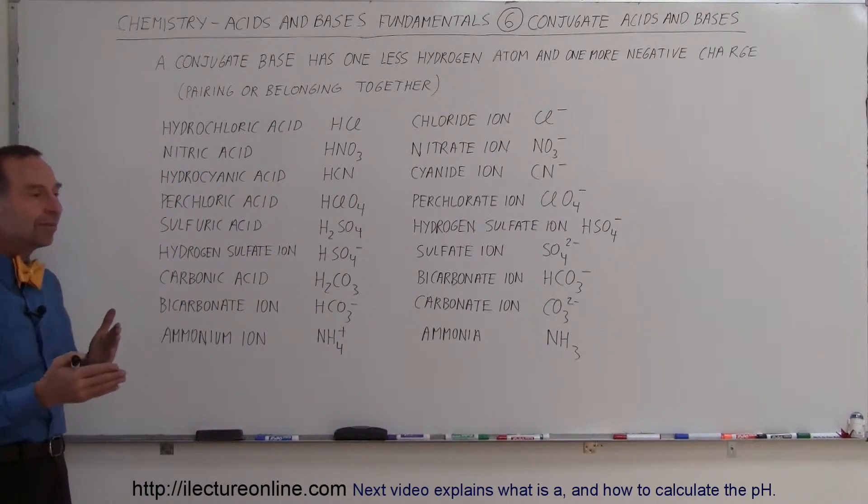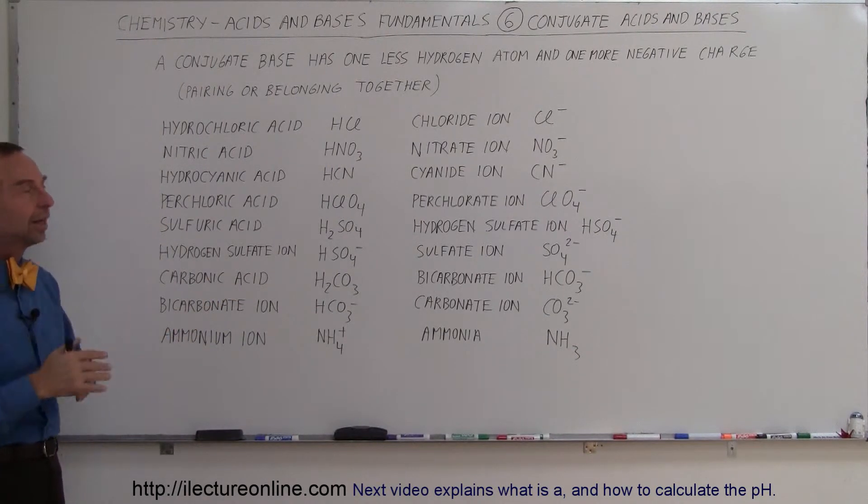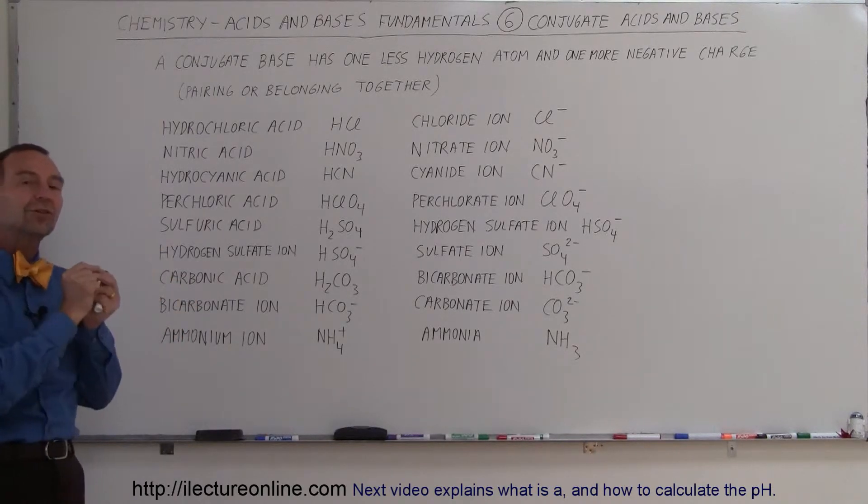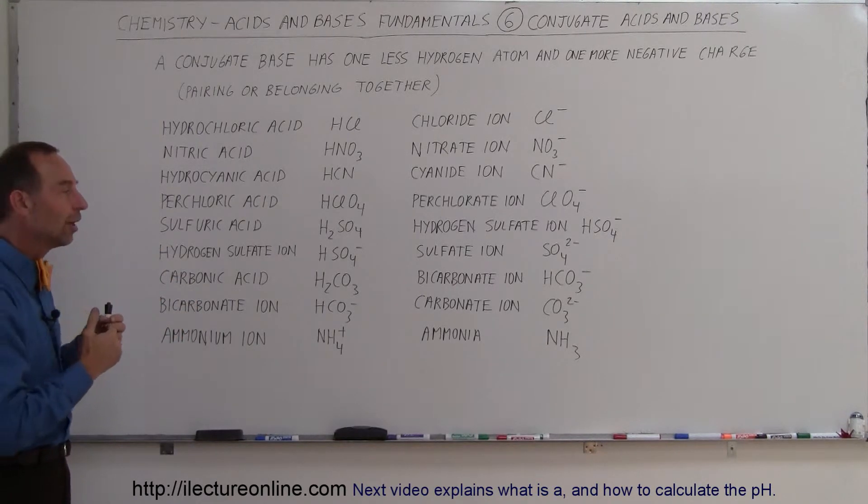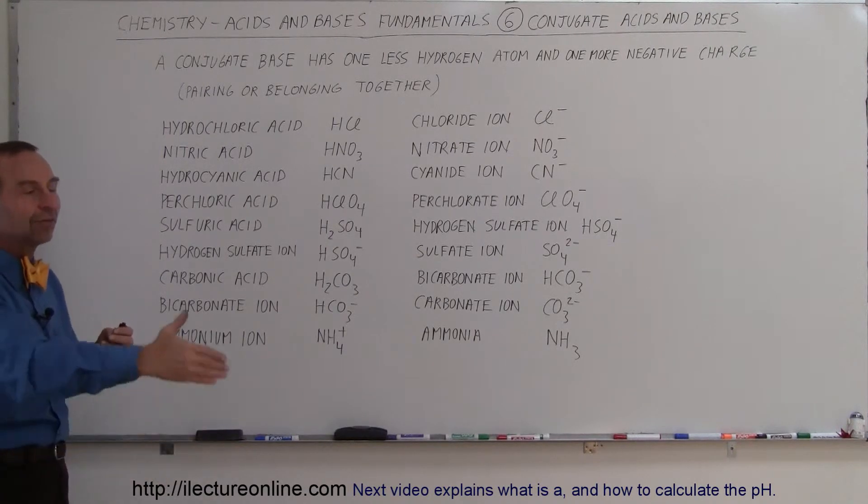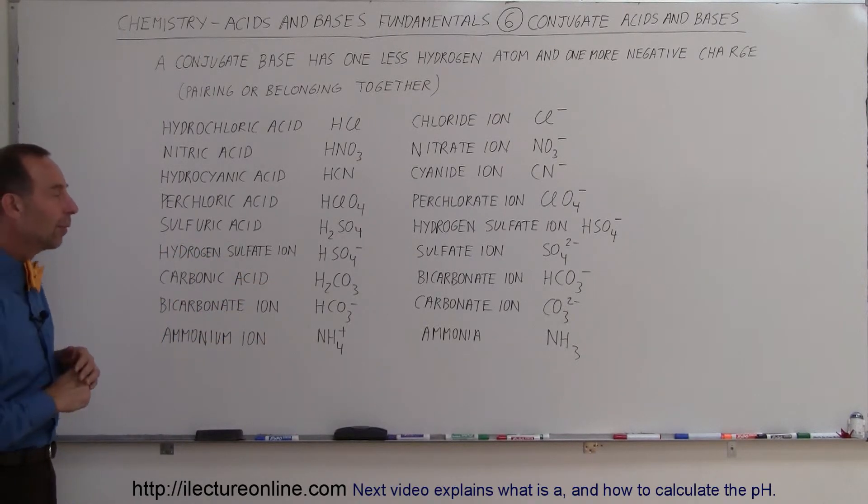So it simply means that for a particular substance, if it can donate a hydrogen, it becomes an acid, and therefore the conjugate base would be that same substance with one less hydrogen and therefore one extra negative charge. And so you can see that that in itself can also become an acid because it can give away another hydrogen, then you can see that there's another conjugate base alongside that one.